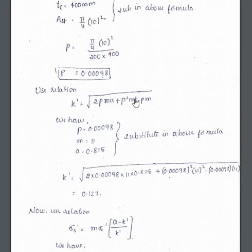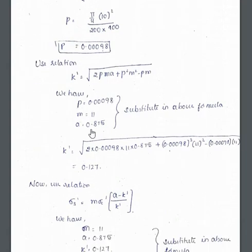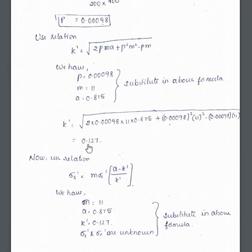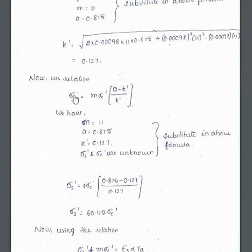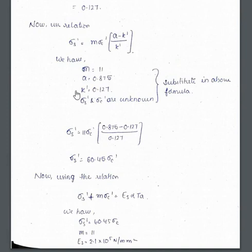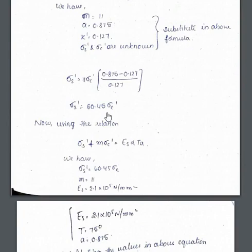Using the relation k' = √(2pma + p²m²) − pm with p = 0.00098, we get k' = 0.127. Then using σs' = m × σc' × (a − k') / k', with k', m, and a known, we express σs' in terms of σc'. Substituting all values, we find σs' = 60.45 × σc'.